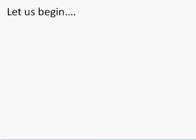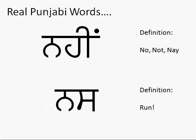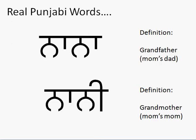Let me show you these words written out neatly. Remember we had namak, which was salt, and now we built namkeen — that's saltish or salty. The other word we learned was nahi — no or not, which is also nay in old English. Then we used the word nas — nana mukta na, sasa mukta sa — nas, and that meant run. And then the last two words we learned were nana, which is your mom's dad, and nani, which is your mom's mom.